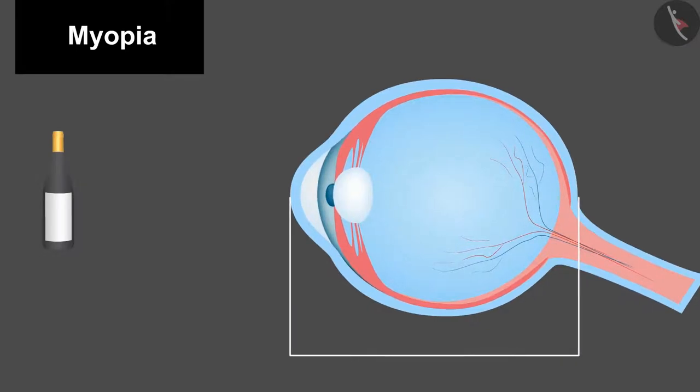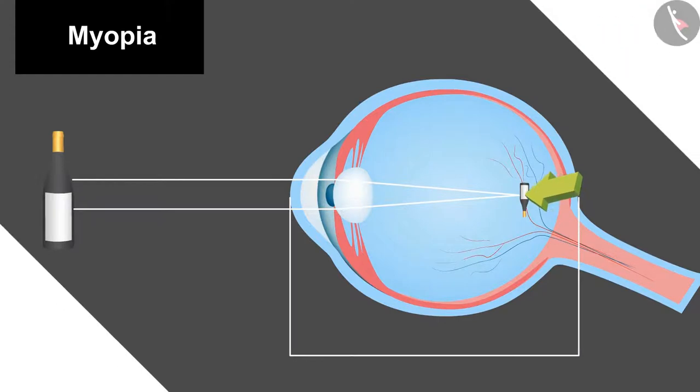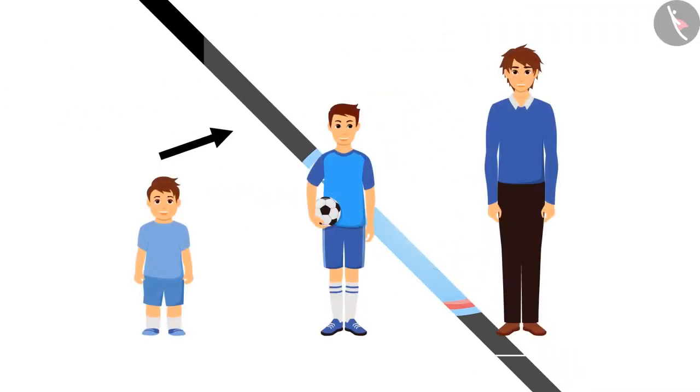This defect is common with growing children because with time the size of the eyes increases. These are the same children whose mention was there in the beginning of the video. If you ask them, they will say that they do not see distant objects clearly.